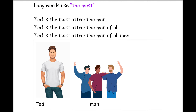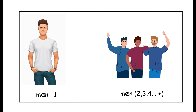Now students, when you have a long word with two or more syllables — like 'attractive' has three syllables, it is a long word — for long words, we use 'the most'. Ted is the most attractive man of all men. Remember, 'man' with A is one; 'men' with E means many men — plural men, two, three men.